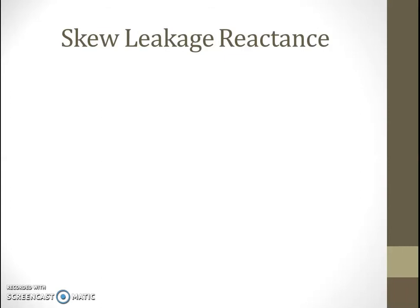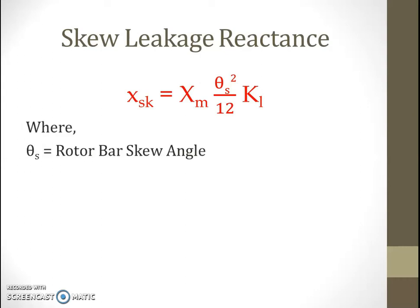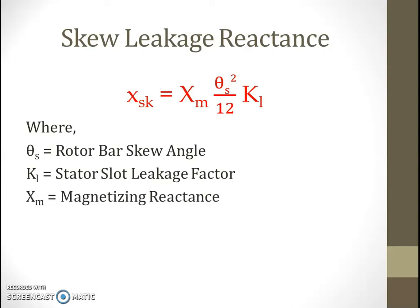At last we have skew leakage reactance, given mathematically as X_sk equals X_m multiplied by θ_s² divided by 12, multiplied by K_l, where θ_s is the rotor bar skew angle, K_l is the stator slot leakage factor, and X_m is the magnetizing reactance.